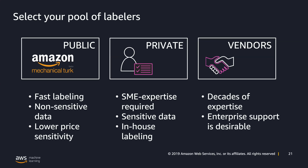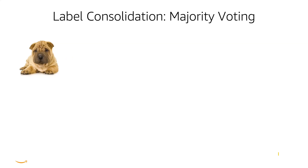Once you get those labelers, you want to make sure they provide accurate results. Normally when giving this presentation in a room, I ask everyone to act as labelers and tell me what dog they see on the top left of the slide. Since this is virtual, I'll just let you know that people tend to give two answers: either a Shar-Pei or a Bulldog.